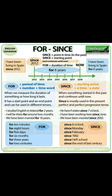Since and for — what is the difference? For and since are prepositions used when talking about time. For is used with a period of time, often a number plus a time word. It is used when we measure the duration of something, or how long it lasts. It has a start point and an end point, and can be used in different tenses.